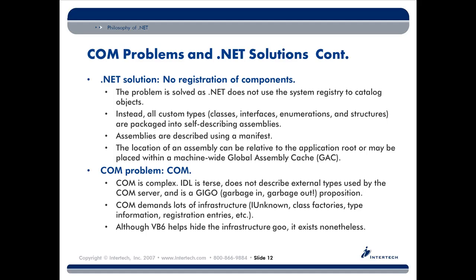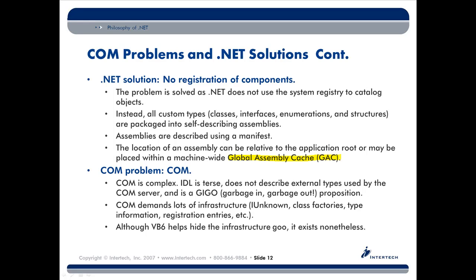Part of that puzzle is the Global Assembly Cache, or GAC. I'm going to pull up a window here in just a second that shows you what the GAC looks like. In the full complete C# class, we have a whole chapter dedicated to installing things to the GAC, how to version assemblies, the distinction between a private and a shared assembly, and XML configuration files. But let me just give you a taste of how things look.